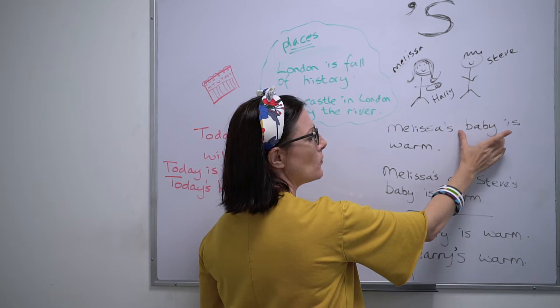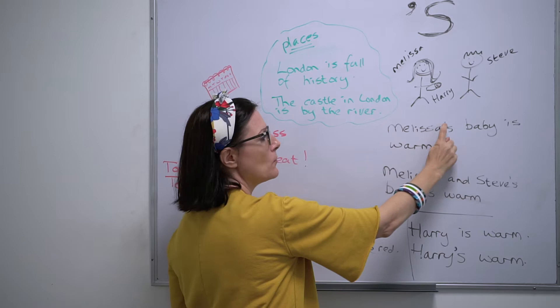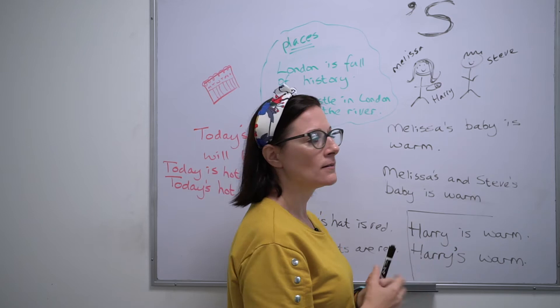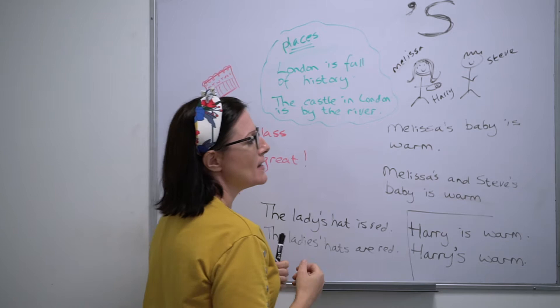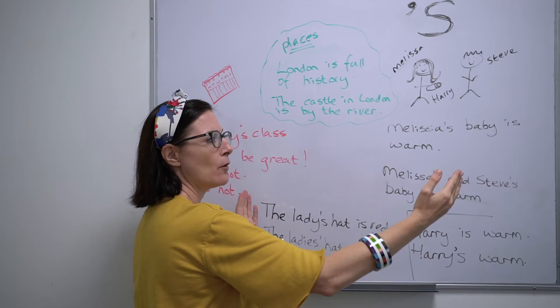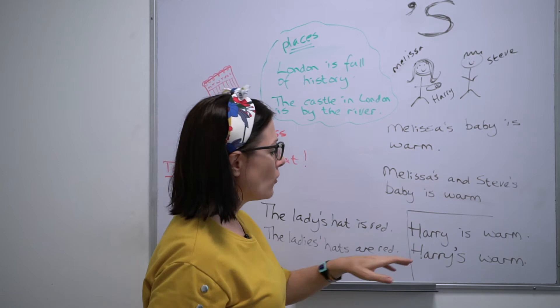So when somebody or something belongs to a person, we put the apostrophe S and then whatever the person or thing is. It could be, for example, Melissa's car is red, Melissa's house is big, Melissa's sweater is yellow. The sweater of Melissa, the car that belongs to Melissa, the house that belongs to Melissa — Melissa is the owner.